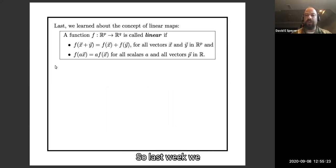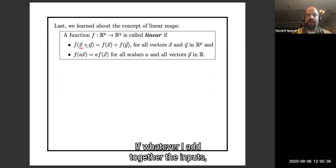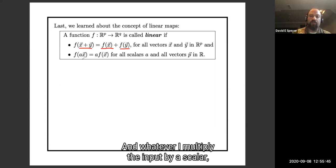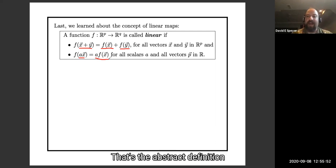Last week we talked about what it means for a function, we also call it a map, to be linear. A function which takes P real inputs and returns Q real outputs is called linear if whenever I add together the inputs, I wind up adding together the outputs, and whenever I multiply the input by a scalar, I multiply the output by the same scalar. That's the abstract definition of what it means to be linear.